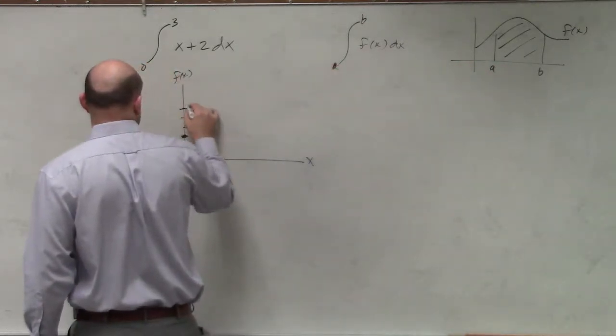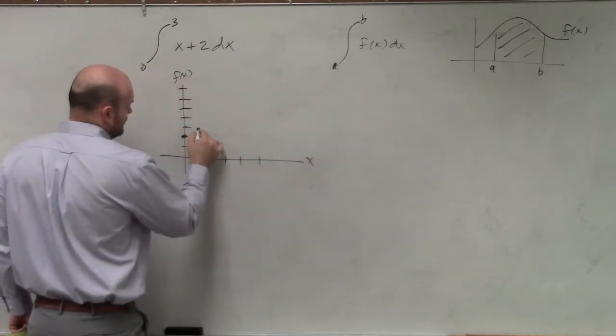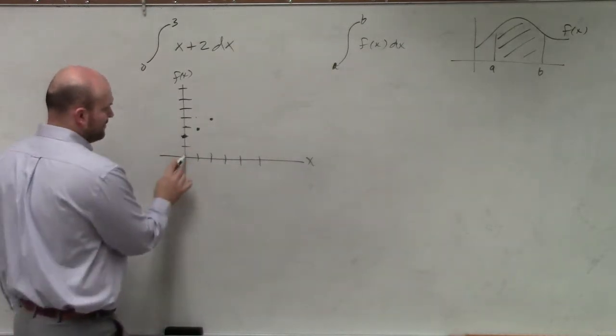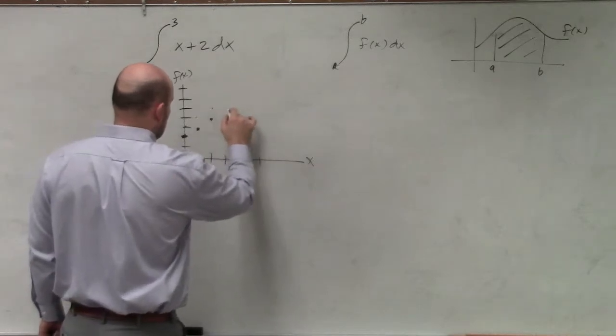So 1, 2, 3, 4, 5 on each axis. So I can go up 1 over 1, up 1 over 1. And let's see, I'm going between 0 and 3, right? So I really need to go up 1 over 1 one more time.